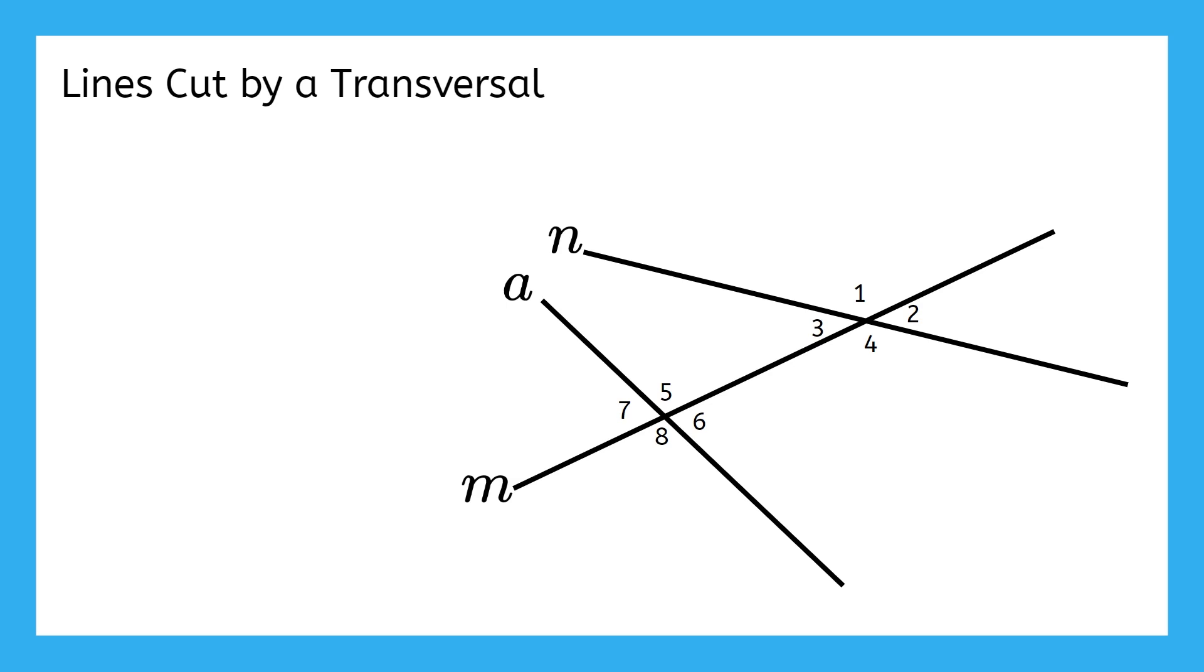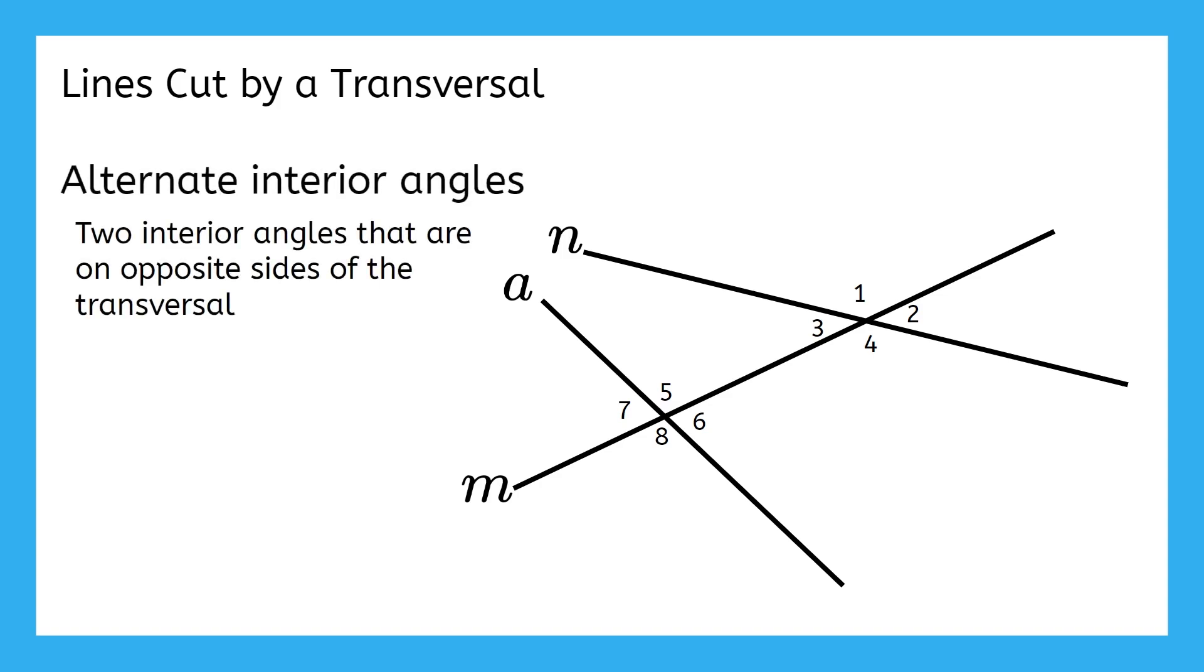First up, our alternate interior angles. Check out this definition and compare it to the definition for alternate exterior angles that we just saw. There are two pairs of alternate interior angles here. Can you identify both pairs? If you said angles 3 and 6, and angles 4 and 5, good job! These are the angle pairs that are on the interior and on opposite sides of the transversal.